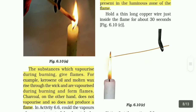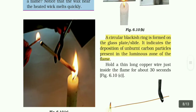6.5 Structure of a Flame. The substances which vaporize during burning give flames. For example, kerosene oil and molten wax rise through the wick and are vaporized during burning and form flames. Charcoal, on the other hand, does not vaporize and so does not produce a flame. During burning, any substances that vaporize — that is what we call a flame. For example, kerosene oil and wax. Charcoal does not vaporize.